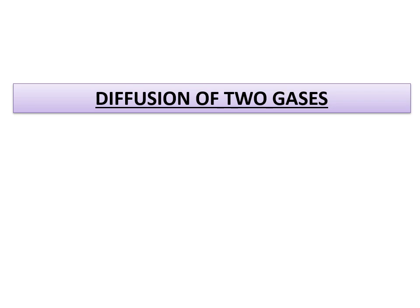One more lab activity showed the diffusion of two gases — ammonia and HCl — using a long glass test tube. We observed how the lighter gas diffuses faster than the heavier gas. I hope you remember this activity related to diffusion of ammonia and HCl gas.